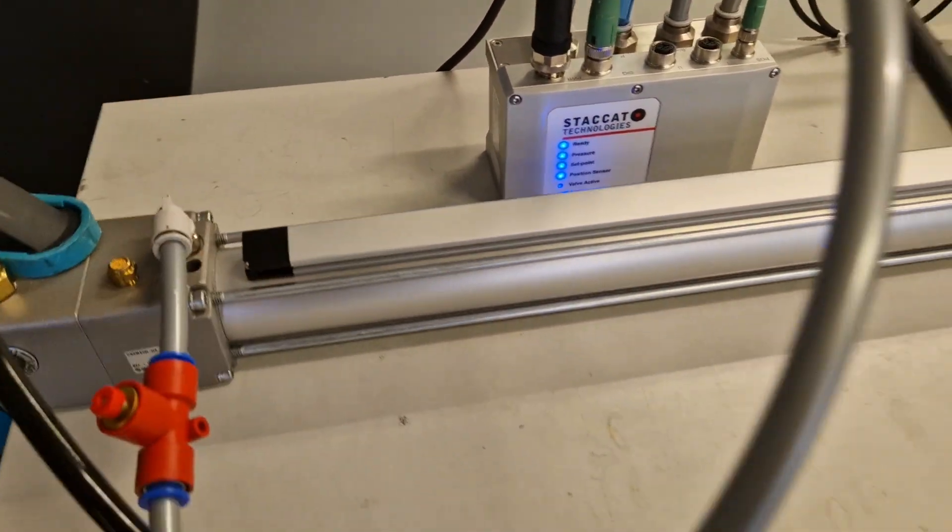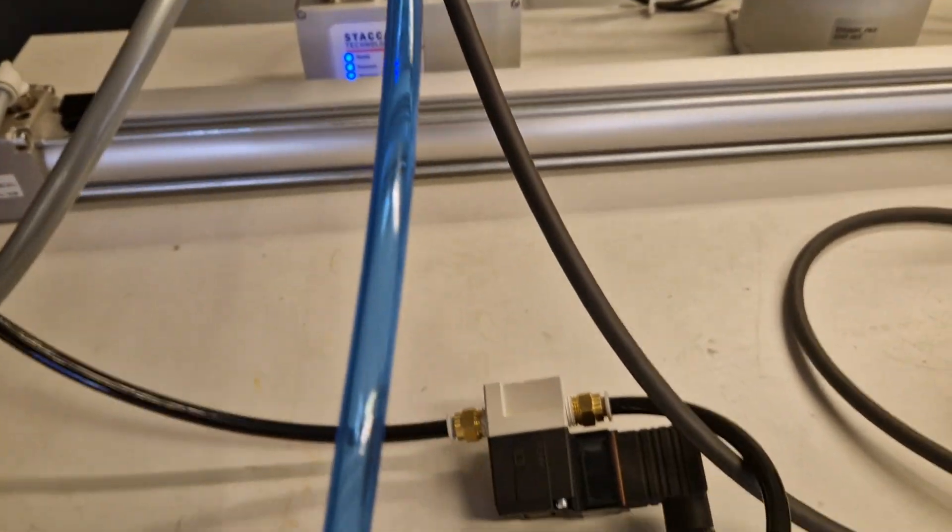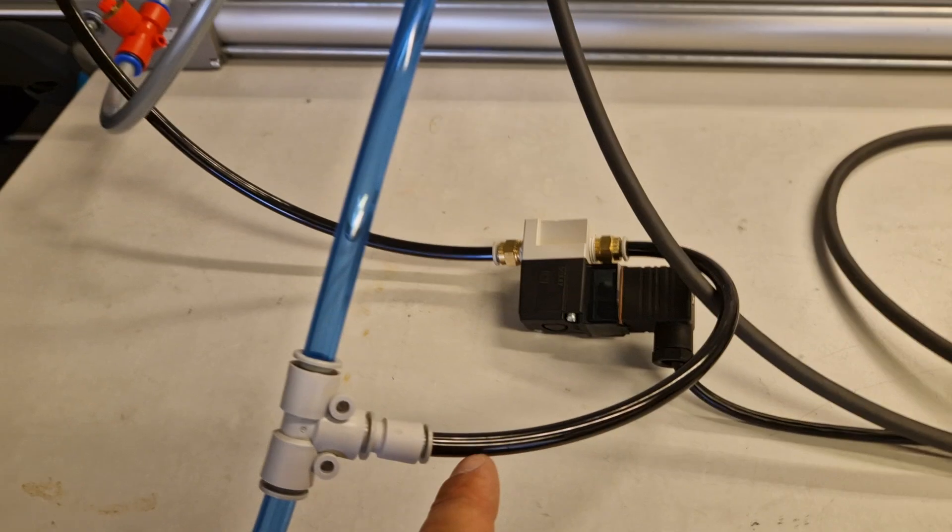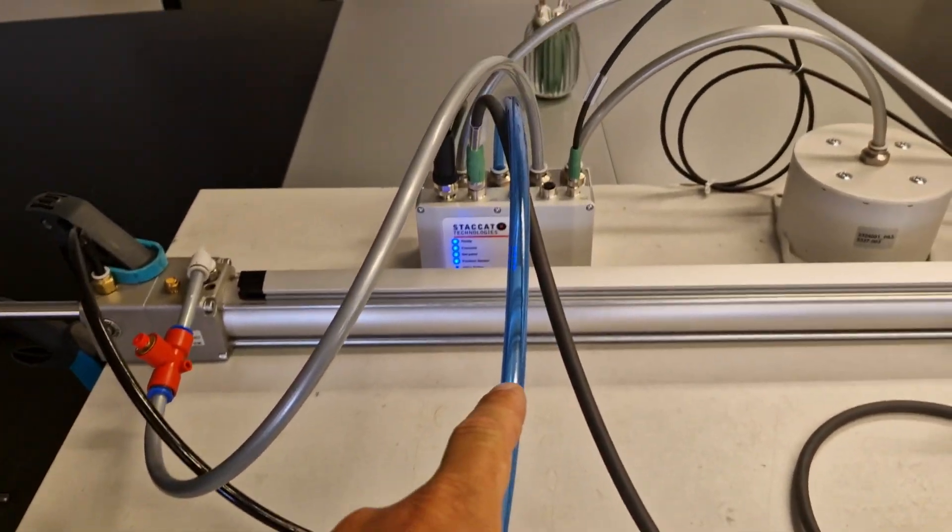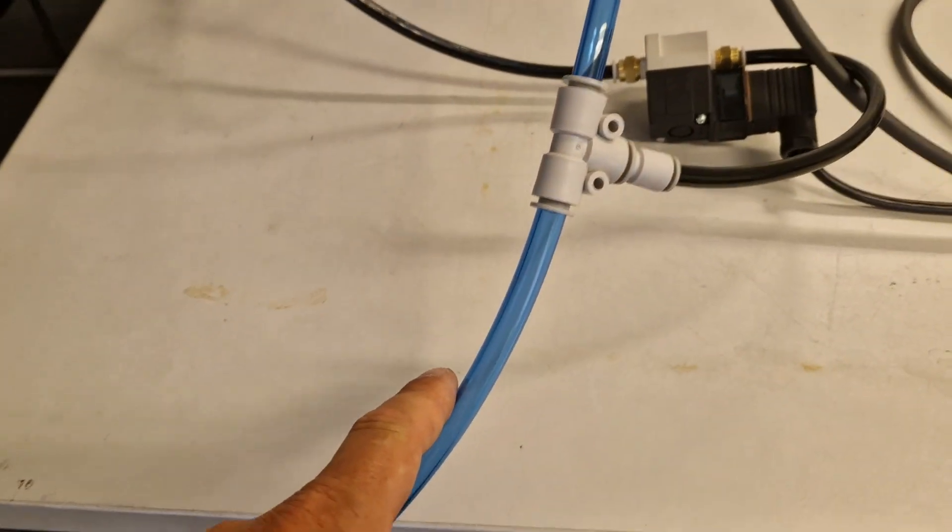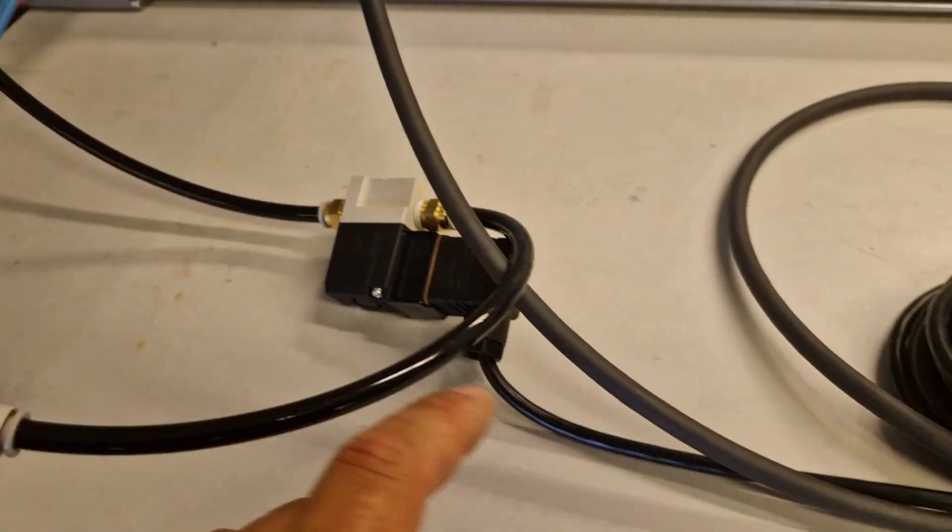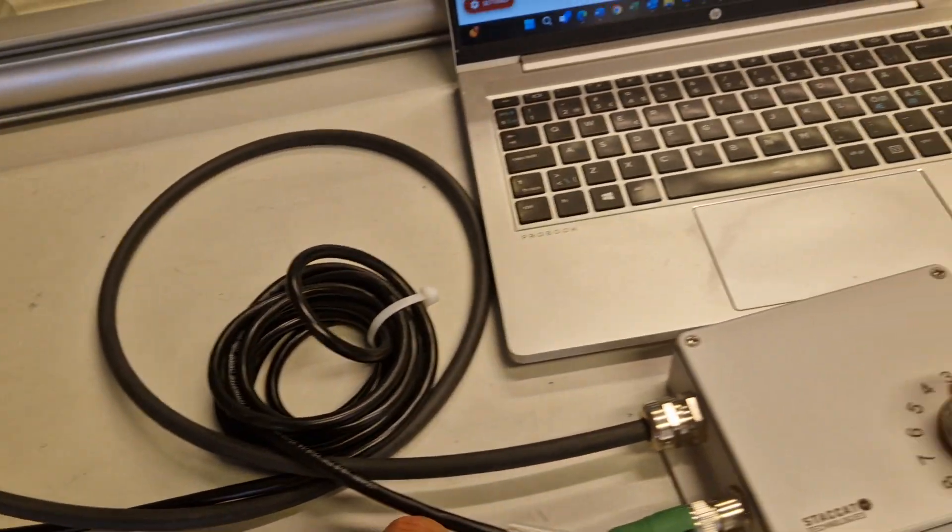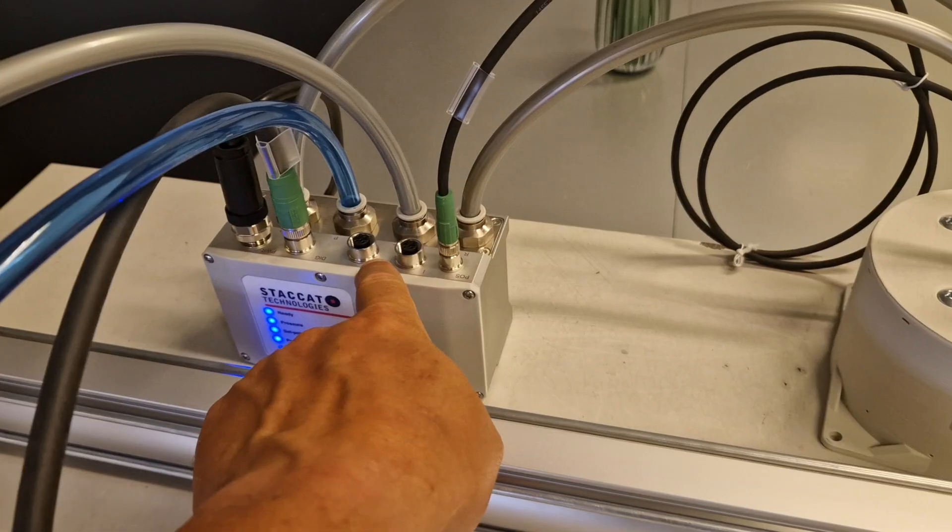Position sensor. We also have a separate valve connected to the main air supply controlling the rod lock, which is controlled through signals by the Staccato positioning unit.